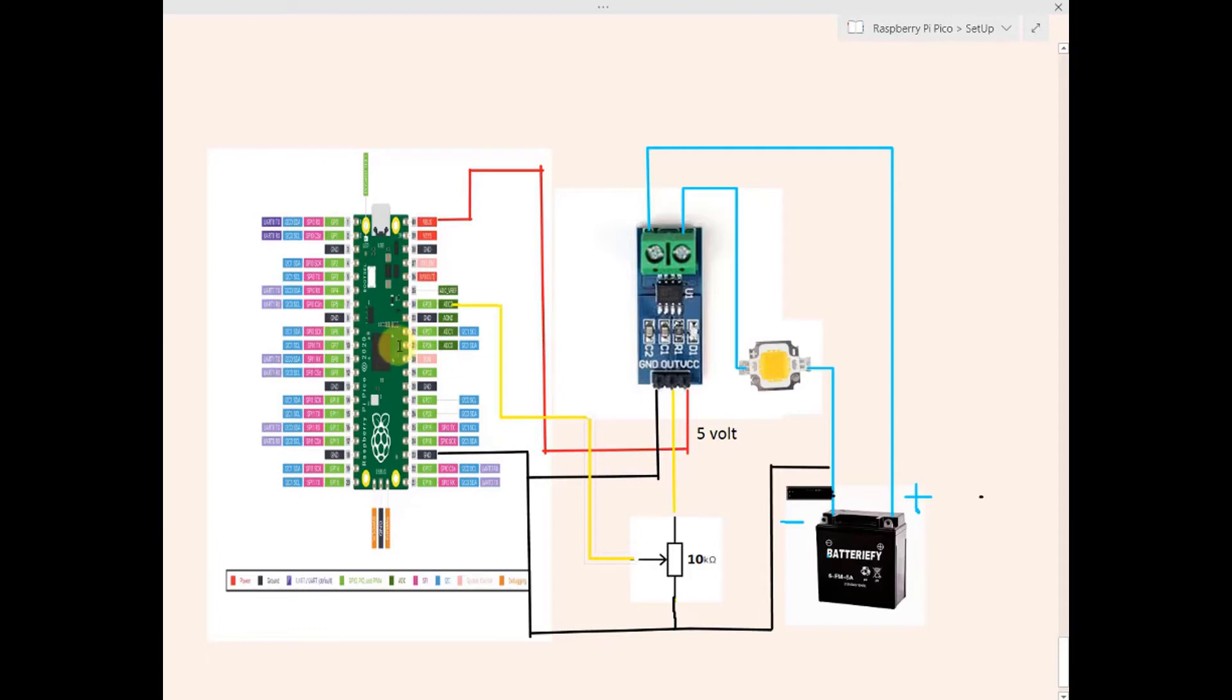and since we do not want to damage the input pins of the Raspberry Pi Pico, therefore we have used this potentiometer as a voltage divider so as to have a maximum of 3.3V at the output on GPIO number 28.